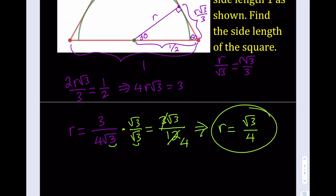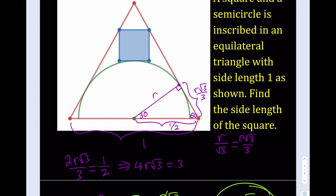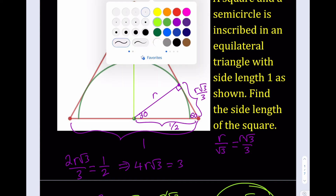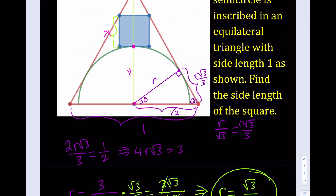So remember, at the beginning of the video I said we're going to find the radius of the semicircle first, and we did. Now we can use that information to complete the process. Now I know R, so let's go ahead and find the side length for the square. I'll be making another connection here. I don't know the side length of the square, so let's call it X. This piece from this point to that point is R, and R equals square root of three over four. And the piece between those two points is the side length of the square, which is X.